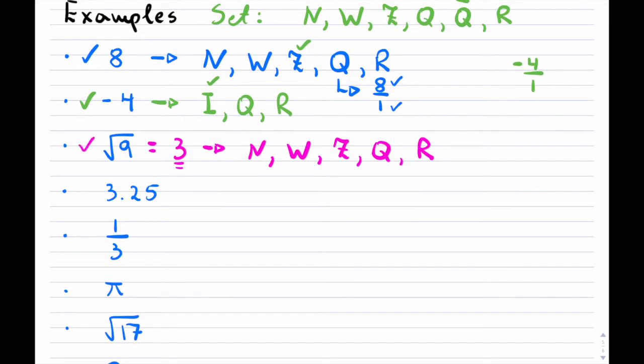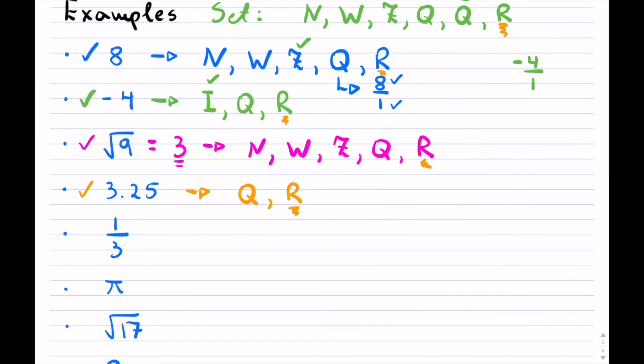The next example that we have, this is a decimal but it ends, which means it is rational, and it also will be real. Notice that real is everywhere, because every fundamental of these numbers is actually real.